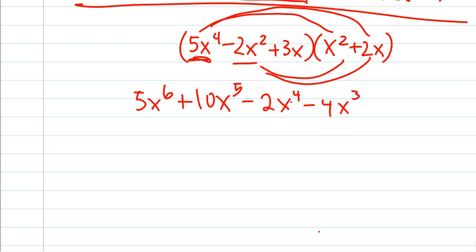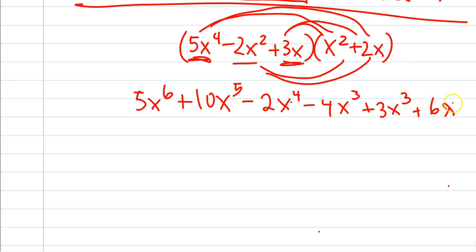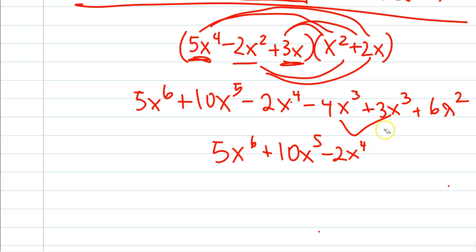We still have the 3x to distribute. So 3x times x squared gives us 3x to the third, plus 3 times 2 is 6x squared. Now combine any like terms and put in descending order: 5x to the sixth, then 10x to the fifth, then negative 2x to the fourth, then negative 4x to the third plus 3x to the third combine to negative 1x to the third — remember, up here we were multiplying, down here we are adding — plus 6x squared.